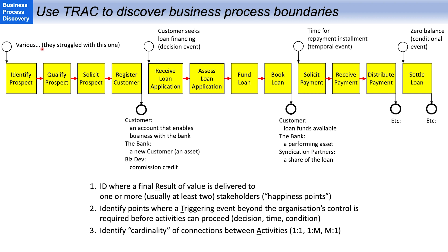An interesting technique is to look at the cardinality — the ratio with which these activities relate one to another. One instance of identifying a prospect leads to one instance of qualifying a prospect, which in turn leads to one instance of soliciting the prospect, and if successful, one solicit prospect leads to one registered customer. But we hope that a registered customer will generate multiple loan applications over time. Then we have another chain of one-to-one activities leading up to a result, and we know that loan is going to take many payments to service it, and then it's going to take many payments before we can settle the loan.